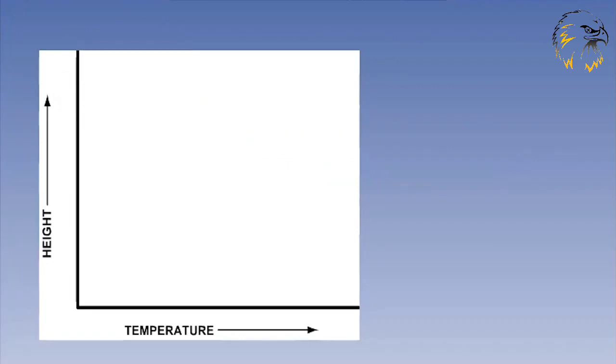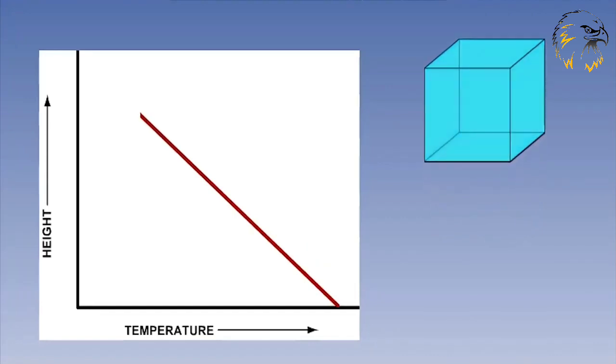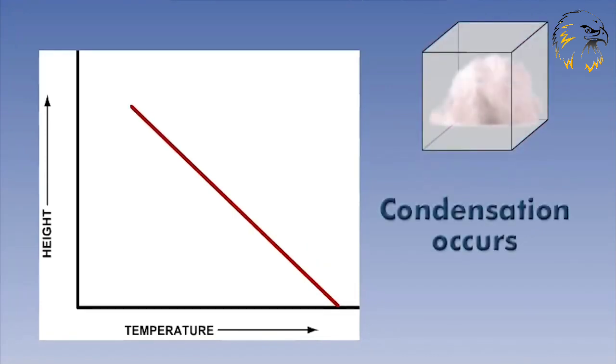Let's consider our parcel of warm, dry air again. If we force it to rise, the temperature will fall at the dry adiabatic lapse rate, or DALR, of 3 degrees Celsius per 1000 feet, or 1 degree Celsius per 100 meters of lift, as we stated earlier. When the temperature falls to a certain level, condensation will take place. The water vapor, previously invisible to the naked eye, becomes visible. In other words, clouds will form.